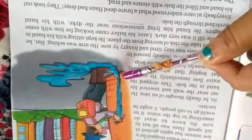Hans was very tired and hungry by now. His arm was aching but he could not take the risk of moving from the place. He would not take the risk of moving from the place. He kept sitting with his hand in the hole till it was very dark. He did not go to home.